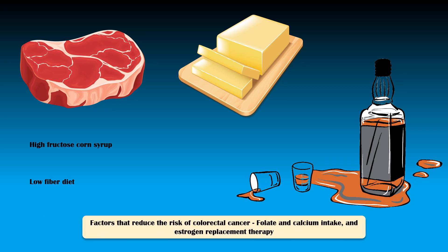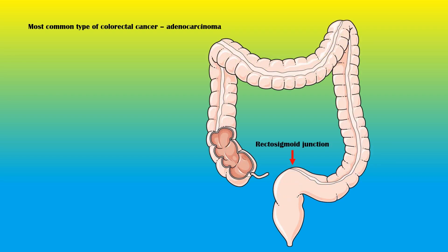Factors that reduce the risk of colorectal cancer include folate and calcium intake and estrogen replacement therapy. The most common type of colorectal cancer is adenocarcinoma. The commonest site of occurrence is the rectosigmoid junction, followed by the ascending colon, and then the descending colon.